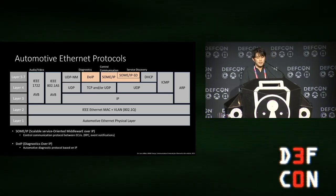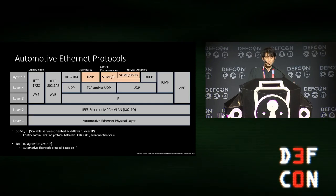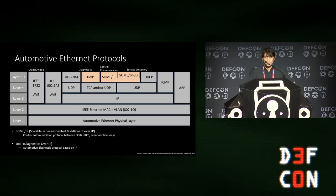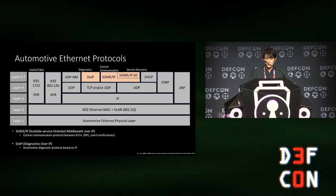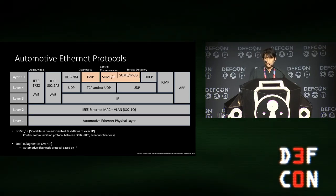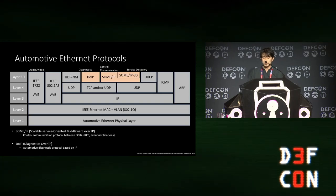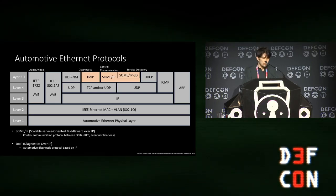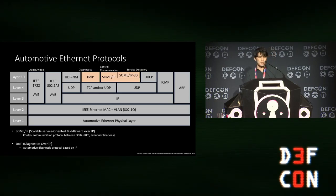Automotive Ethernet is based on TCP and UDP. There are two main protocols: the first is DoIP, a diagnostic protocol similar to UDS over CAN. The second is SOME/IP, which will be covered in this talk — it's a control communication protocol between ECUs, handling remote procedure calls and event notifications. There is also SOME/IP-SD, the SOME/IP Service Discovery protocol, which allows ECUs to advertise their services and discover services running on other ECUs.